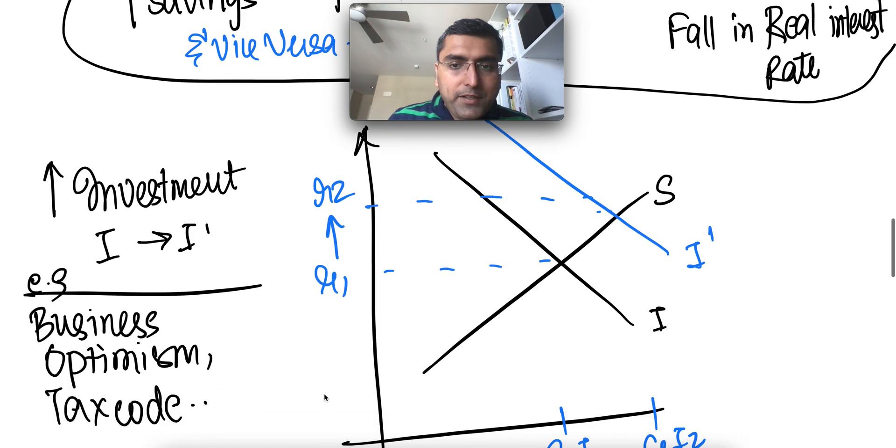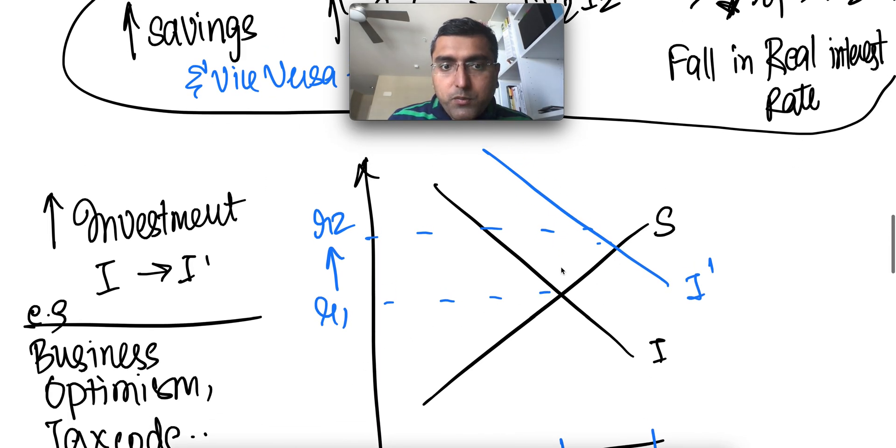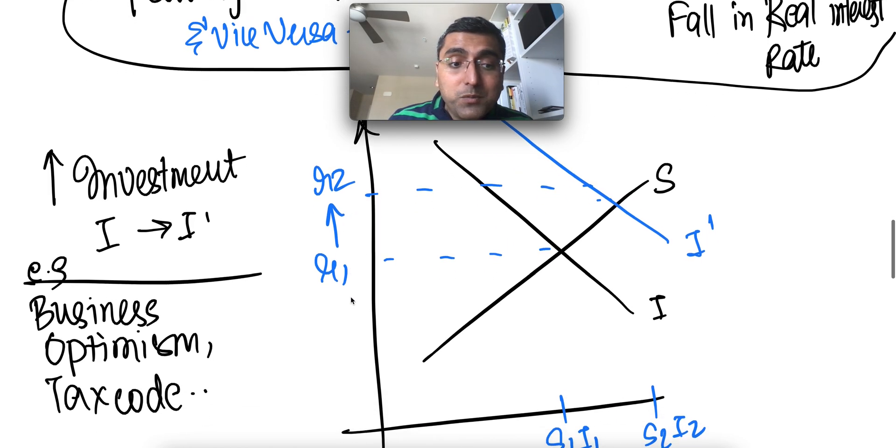So similarly, if investments go up, opposite, as we saw, as investment goes from I to I1, interest rate go up. Because more people are willing to build factories, there's lots of optimism, there's a tax cut.